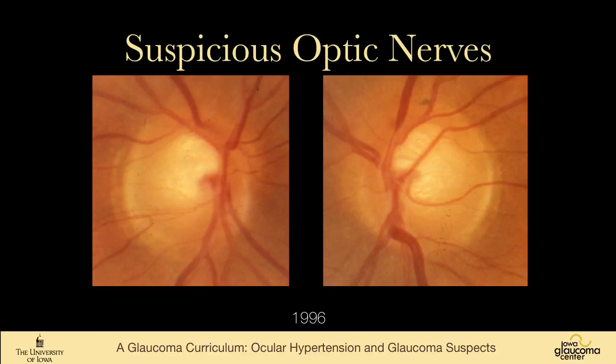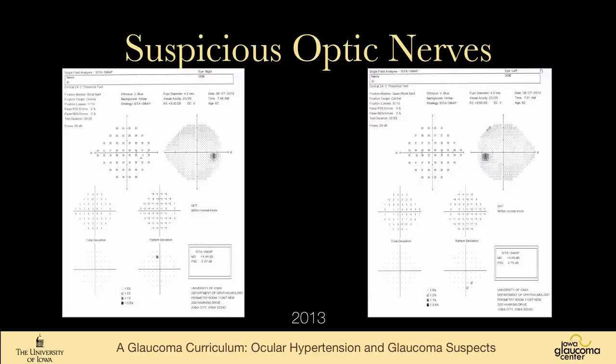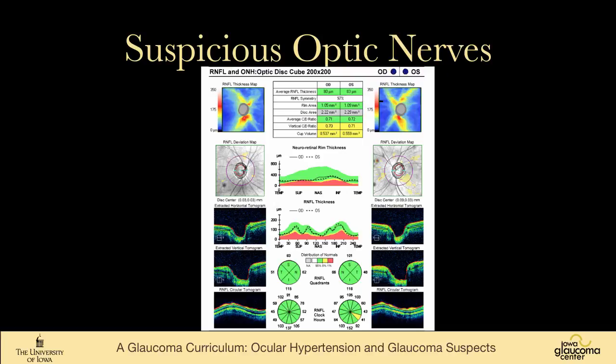This is a patient I've been following since 1996 — very large cup-to-disc ratios, but the rims are intact. He may be the only patient on whom I do SWAP perimetry because he's really good at it and I've been doing it for years. But his fields are normal. Now that OCT is available, we can see that despite having a very large cup, he also has a very large disc and the average nerve fiber layer thickness is normal. Everything else looks normal. So this is a person with a large cup-to-disc ratio based on the fact that he has a very large disc. Rim area is normal despite the size of the cup.